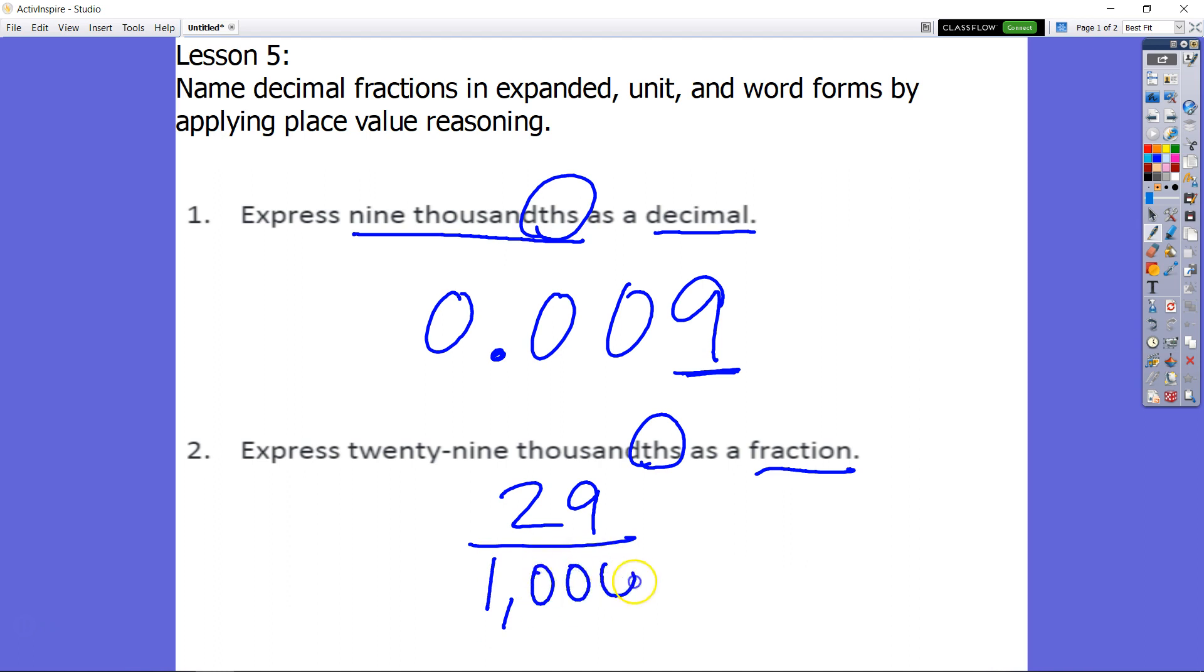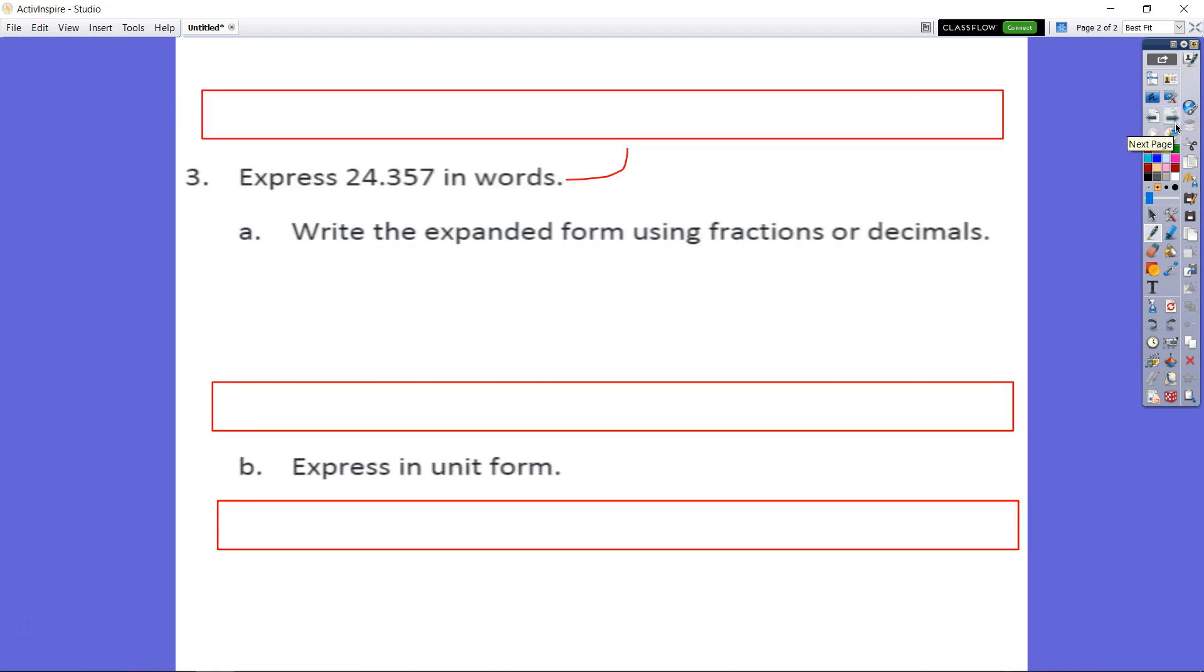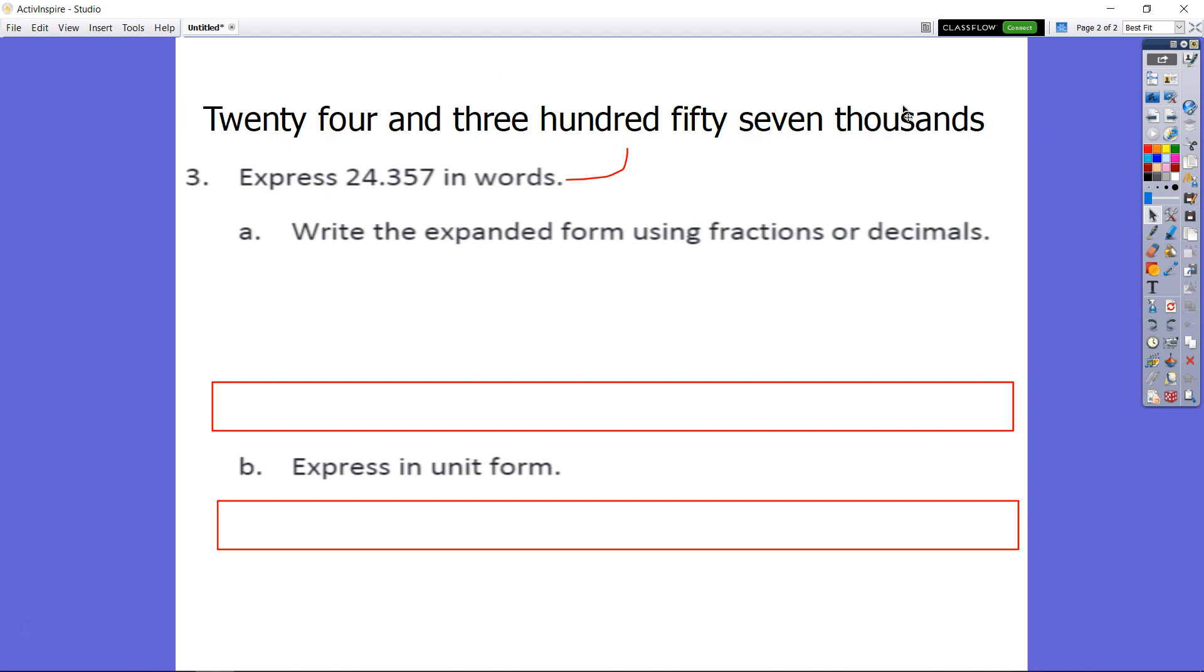Moving on, now it says express 24.357 in word form. It says 24 and 357 thousandths in word form. All right, so I already did that for us here and that's how it's going to look.